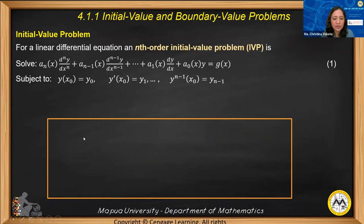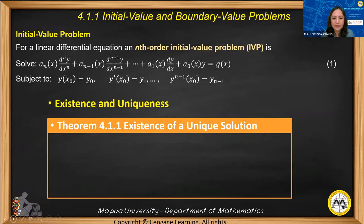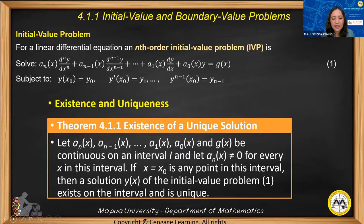We want to know whether we can find a solution that exists and that the solution is unique. In Theorem 4.1.1 on the existence of a unique solution: let a_n(x), a_{n-1}(x), through a_1(x), a_0(x), and g(x) be continuous on an interval I, and let a_n(x) not equal zero for every x in the interval. If x equals x_0 is any point in this interval, then a solution y(x) of the IVP exists on the interval and is unique.